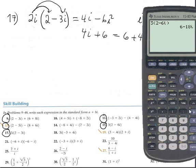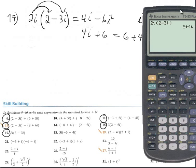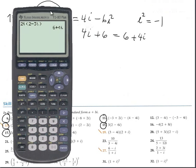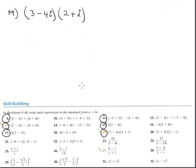Let's verify with the calculator: enter 2i times parenthesis (2 minus 3i), close the parenthesis, then press enter. The answer is 6 plus 4i. Perfect.